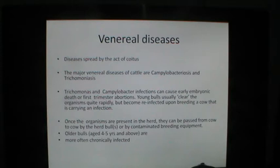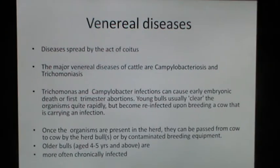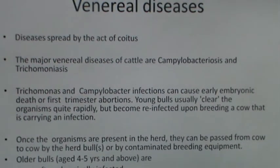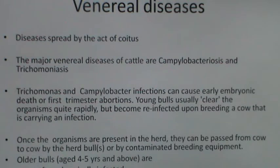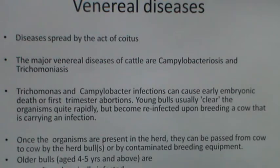Venereal diseases are those which are spread by the act of coitus. The major venereal diseases of cattle are Campylobacteriosis and Trichomoniasis. Trichomonas and Campylobacter infection can cause early embryonic death or first trimester abortions. Once the organisms are present in the herd, they can be passed from cow to cow by the herd bulls or by contaminated breeding equipment.